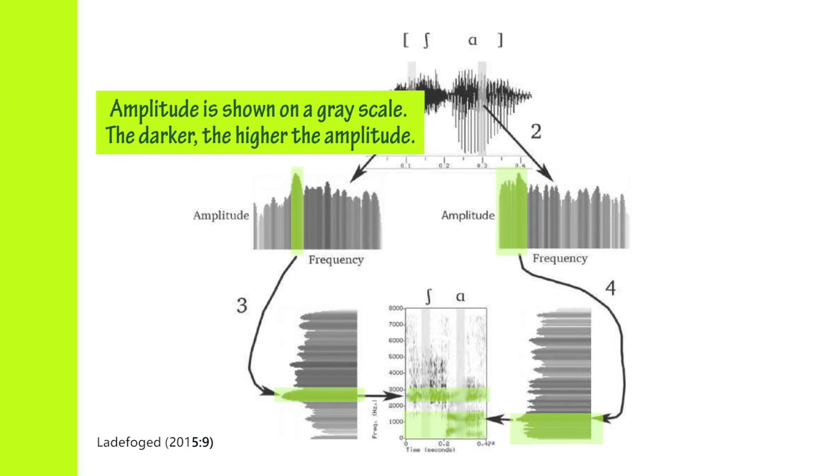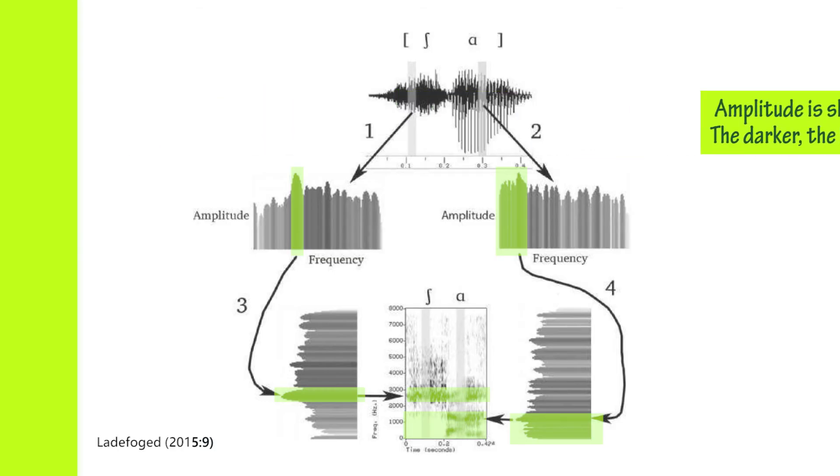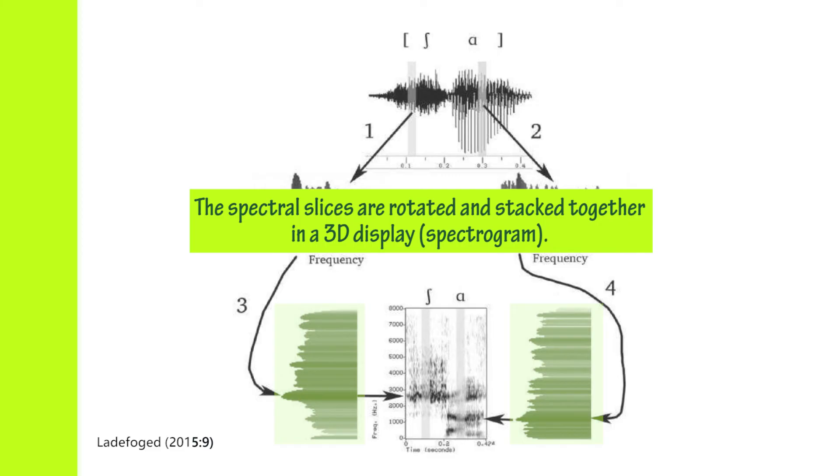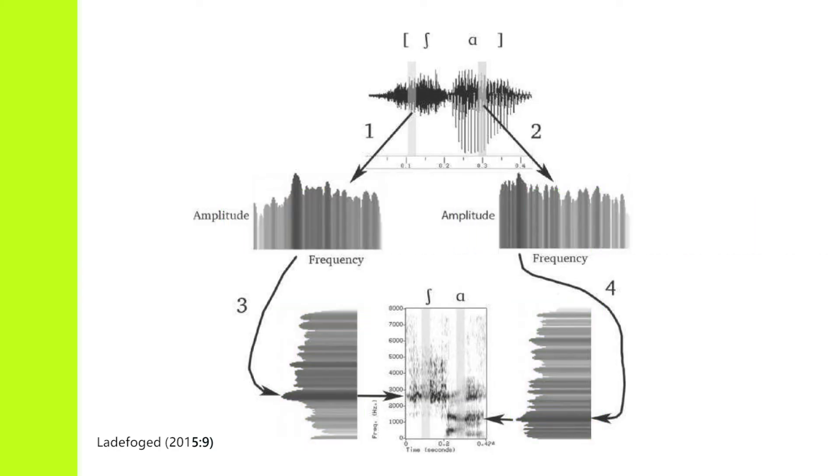is shown on a gray scale—the darker, the higher the amplitude. You see even these cutouts have different degrees of darkness, which shows the amplitude. The spectral slices (each of these is called a spectral slice) are rotated and stacked together in a three-dimensional display. That three-dimensional display, which is here down in the middle, is called